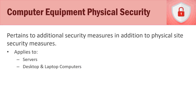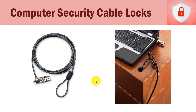In this video we're going to talk about computer equipment physical security. These are additional security measures that we can take in addition to our site security measures already covered — so not security guards, secure doors, secure areas, or video cameras. We're going to hone in on things we can apply specifically to servers, desktops, and laptop computers, adding another compensating layer of security on top of site security.